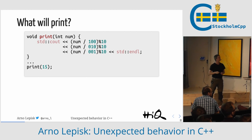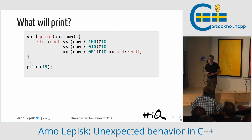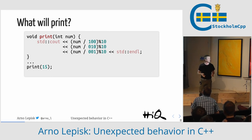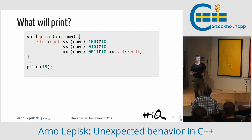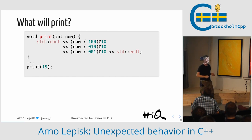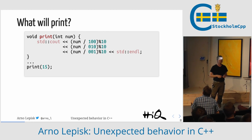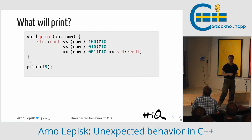Regarding the address-of operator: is std::addressof zero-cost? It does some work, but as far as I understand it, that work is always done at compile time. If you compile without optimizations there might be some cost, but I believe those casts are resolved at compile time. I don't see any more hands. Thank you.